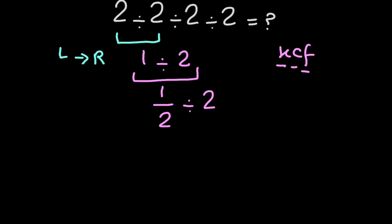So, keep the first fraction 1 over 2, change division to multiplication and flip the next fraction to 1 over 2.